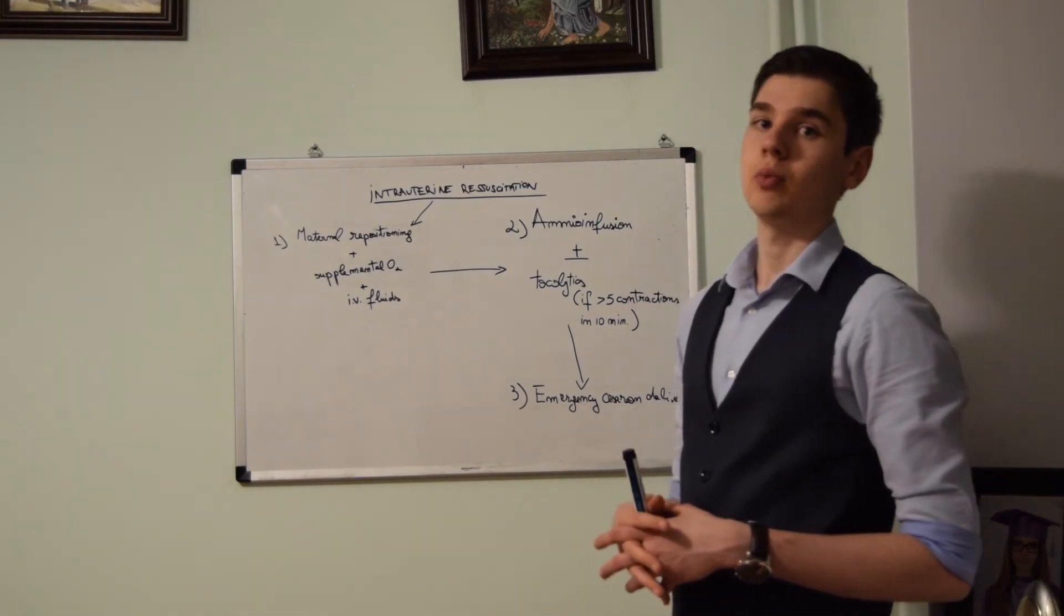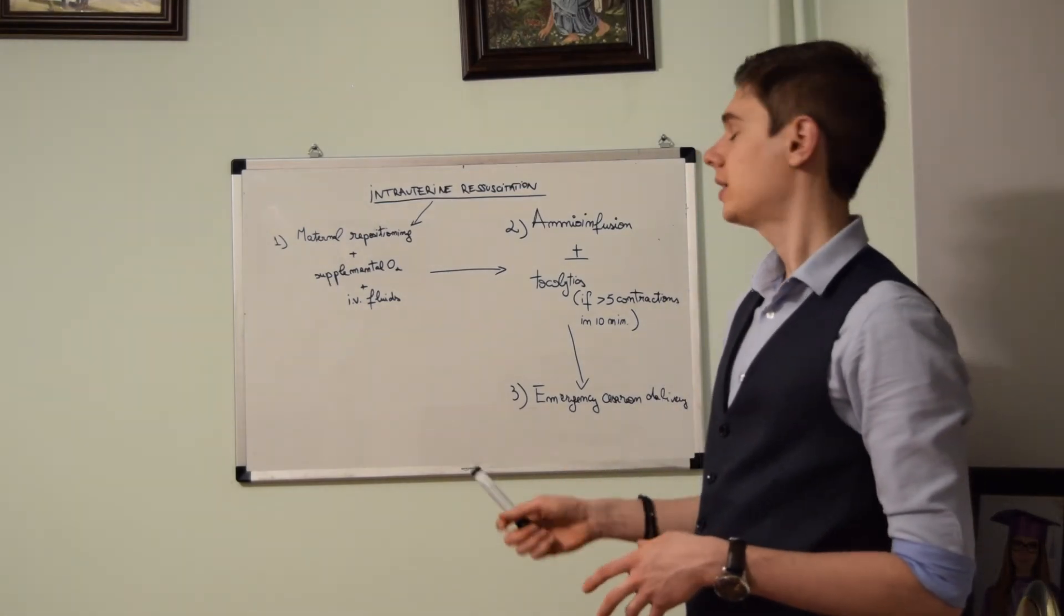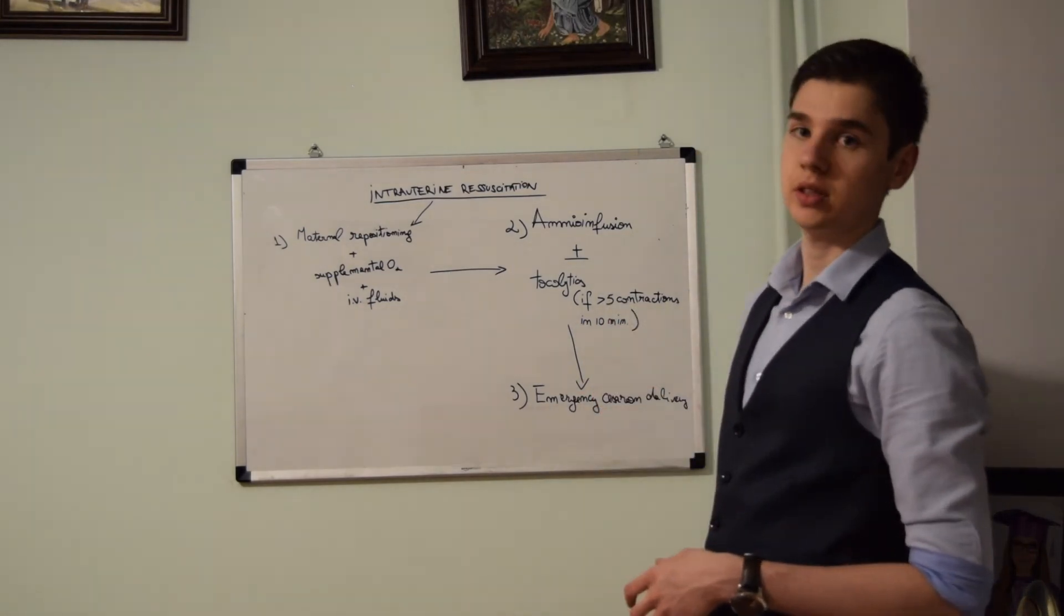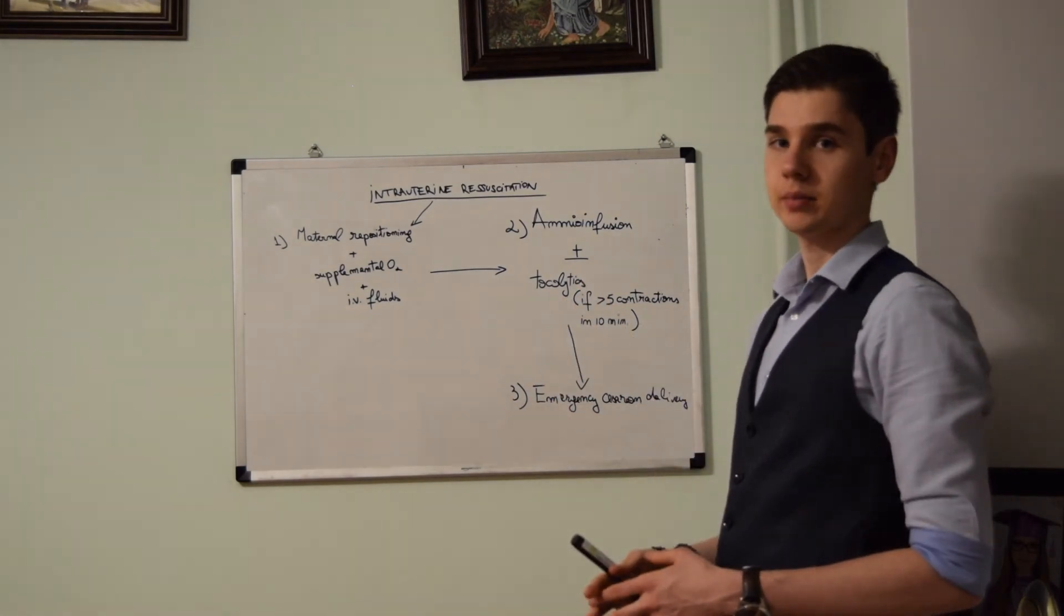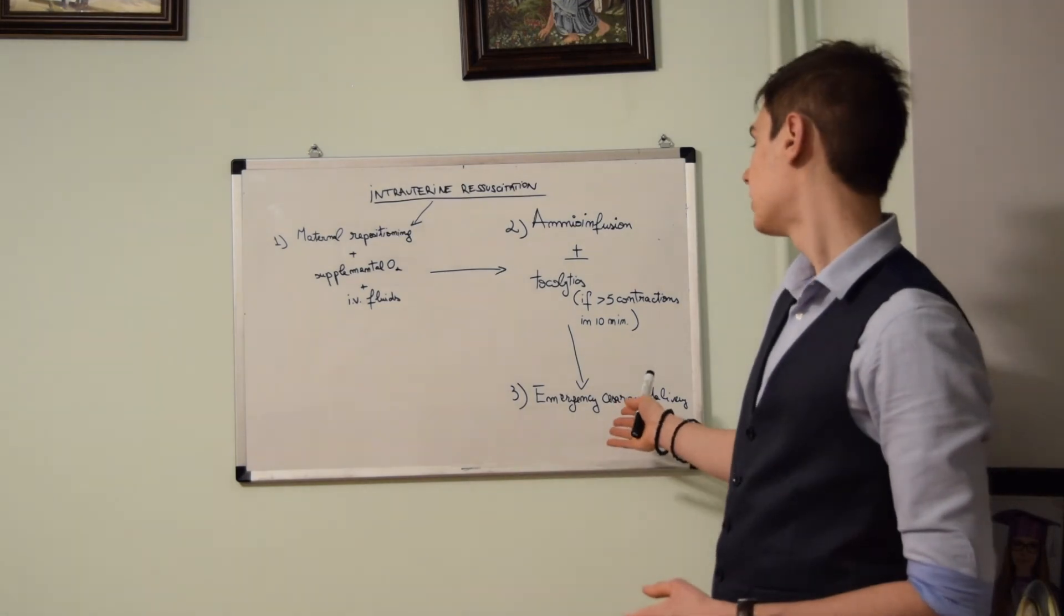If the mother has more than 5 contractions in 10 minutes, then we also administer tocolytics. In the moment the second stage fails, we proceed with an emergency cesarean delivery.